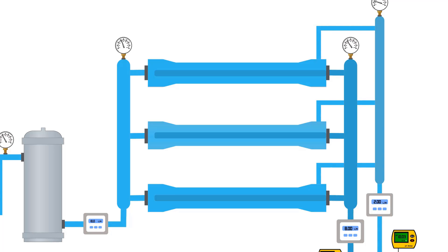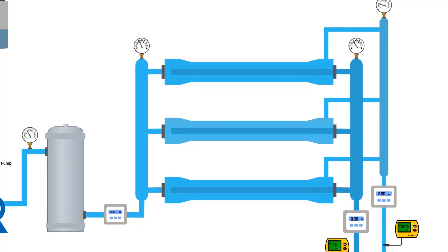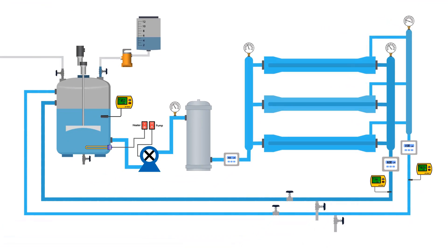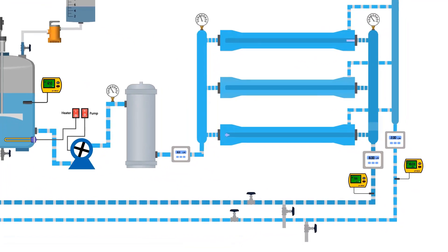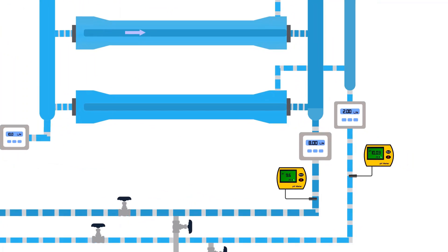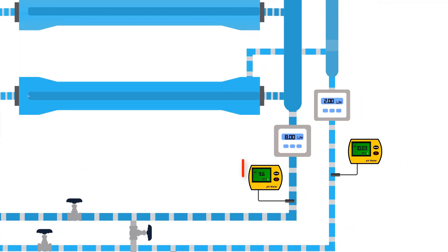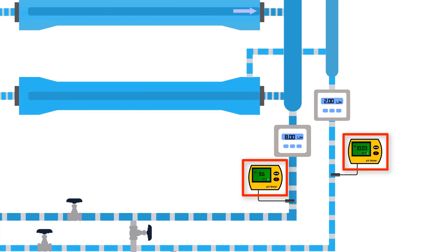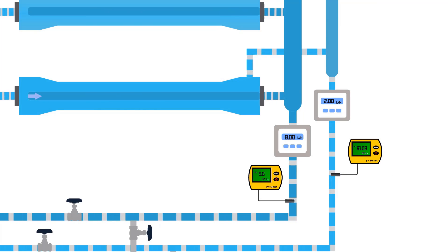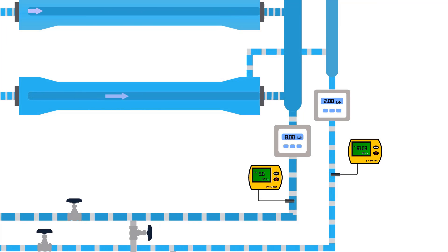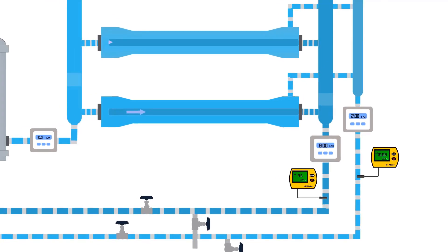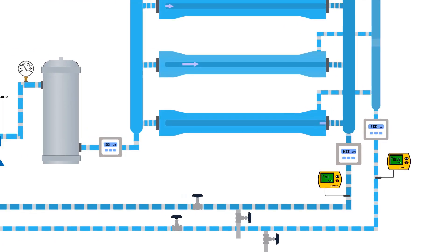After 30 minutes, turn on the pump and continue the cleaning process. When the pH of both the permeate and reject reaches 12, it means the microbiological and suspended particles have been removed from the membranes. That's all about the alkaline treatment of RO membranes.